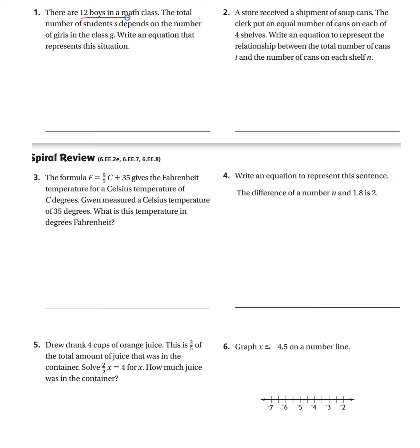There are 12 boys in a math class. The total number of students, S, depends on the number of girls in the class, G. So I'm going to take the boys plus the girls. Well, there I got it right there. Done. I'm just pulling information out as I go.